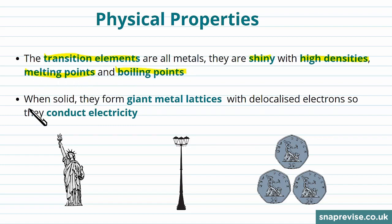When they're in their solid states, they form giant metal lattices with delocalized electrons. You should have studied this structure before and know that it conducts electricity. So these are all typical properties of the transition metal. Because of things like their high densities and their shininess, they're used a lot in objects you'll see around.